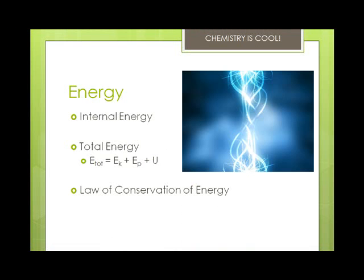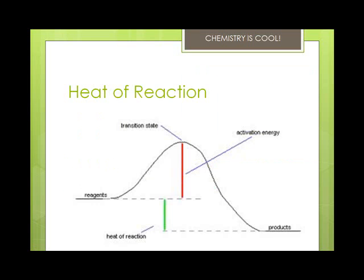The internal energy is the energy of the particles making up a substance. The total energy of a system is the sum of its kinetic, potential, and internal energy — internal energy is U in this equation. The law of conservation of energy states that energy may be converted from one form to another, but the total quantity of energy remains constant. For example, you can change heat into kinetic energy, like an internal combustion engine does, but you don't lose that energy. In chemical reactions, heat is often transferred from the system to its surroundings or vice versa.